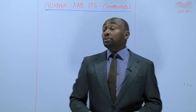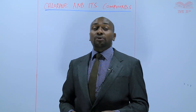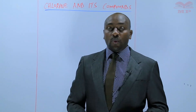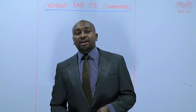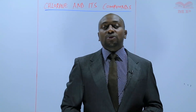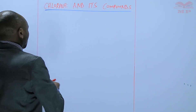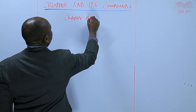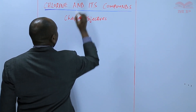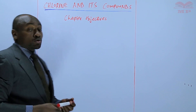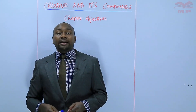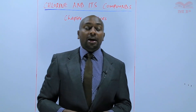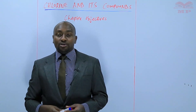The first thing we'll do before we get into the details about chlorine and its compounds is discuss the chapter objectives — what are the requirements for every learner by the end of this chapter. The first objective: a learner should be able to describe the preparation, properties and uses of chlorine.